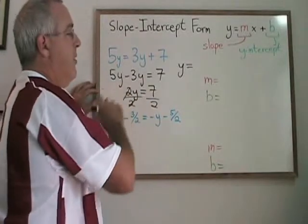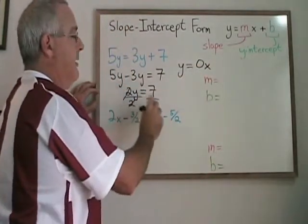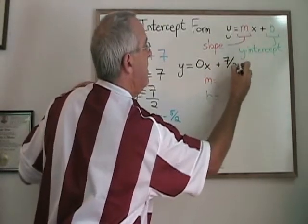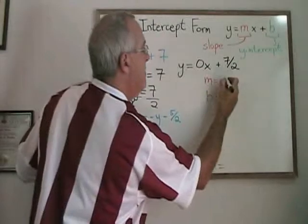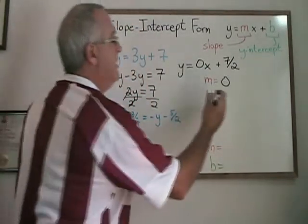There is no x term, but I can write 0x, and then I have 7 halves, so I write plus 7 halves. My slope is 0, which is expected because it is a horizontal line, and my y-intercept is 7 halves.